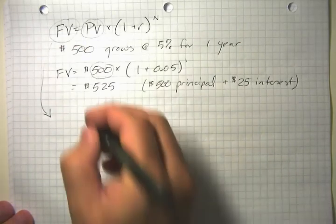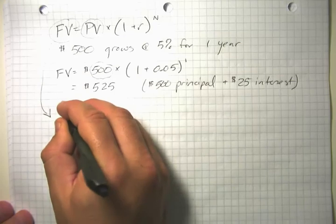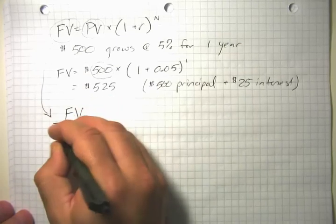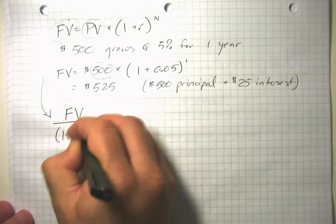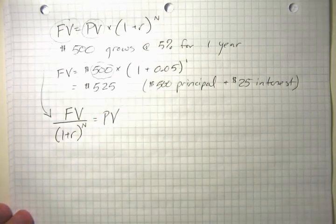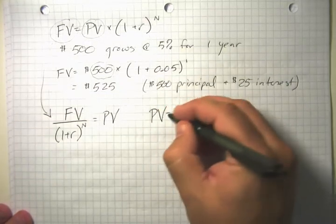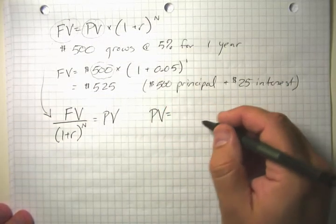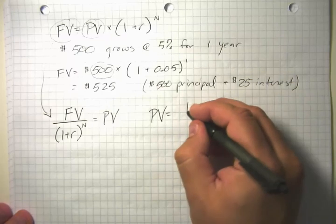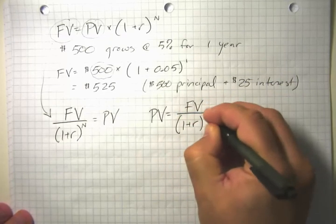I'll rearrange this formula to solve for present value. Dividing both sides by (1 + r)^n gives us PV = FV / (1 + r)^n. Often, to emphasize that present value is the unknown and future value is known, we write it in this order.